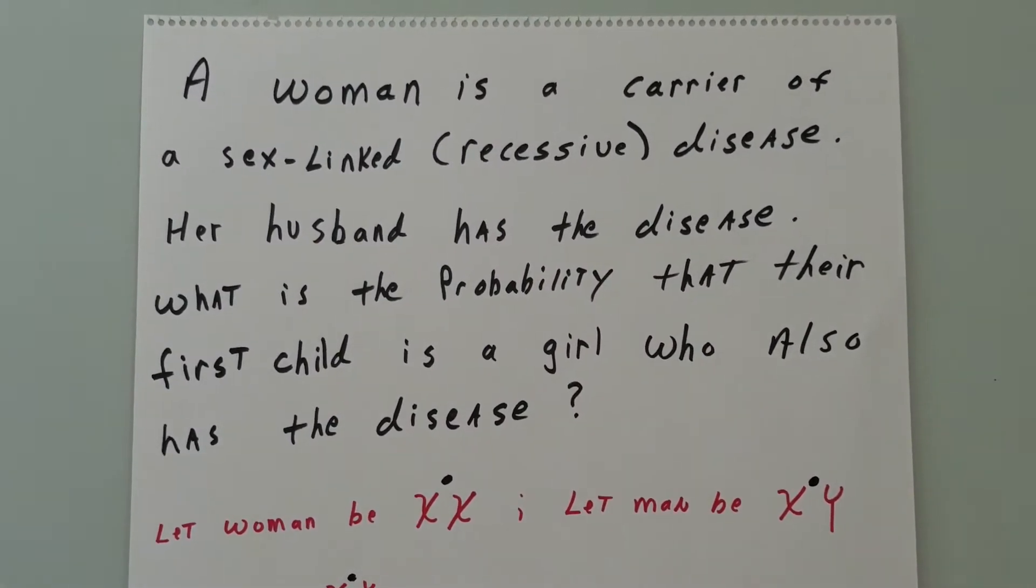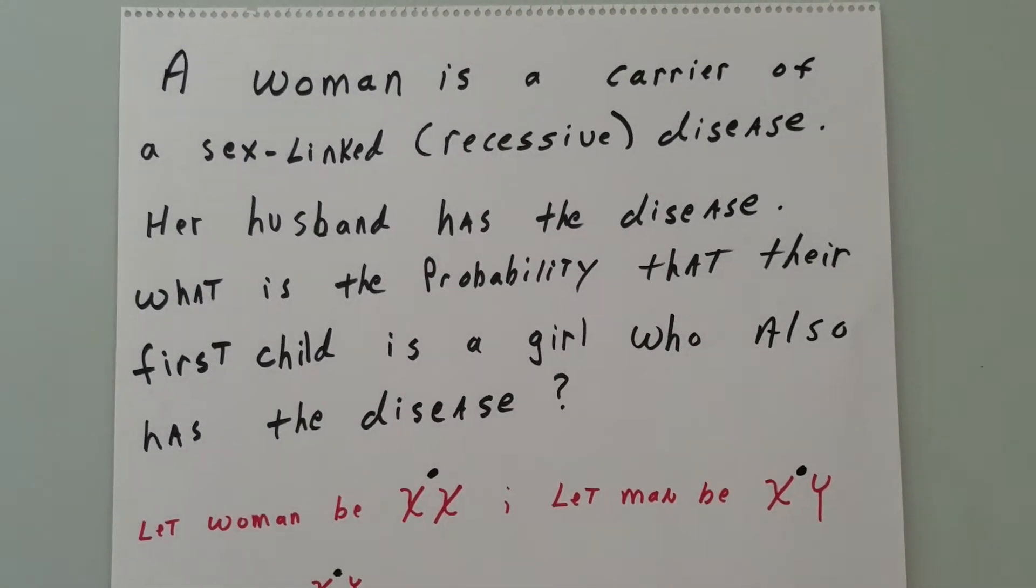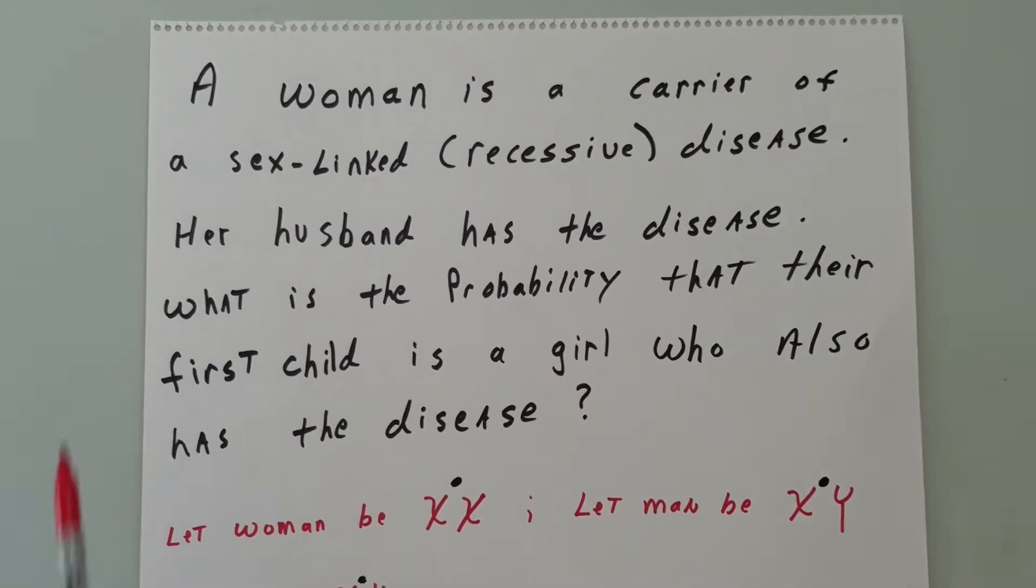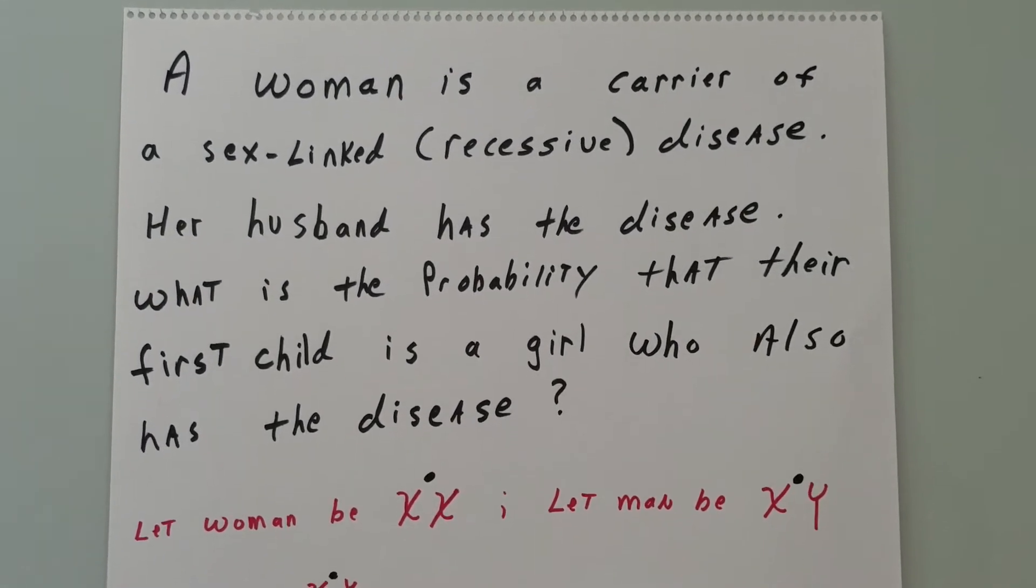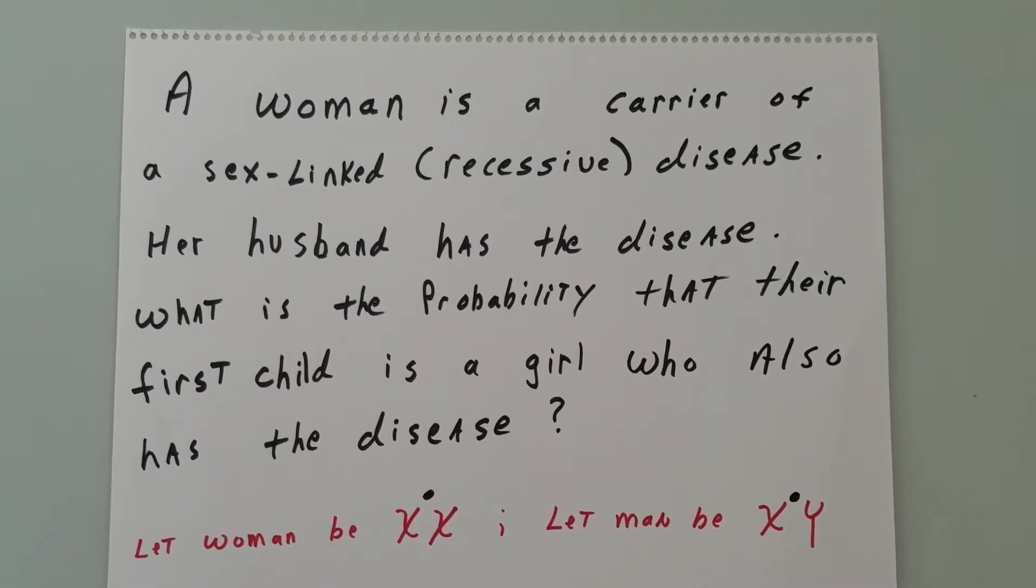It says that a woman is a carrier of a sex-linked recessive disease. Her husband has the disease. What is the probability that their first child is a girl who also has the disease?